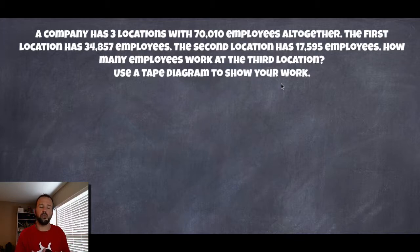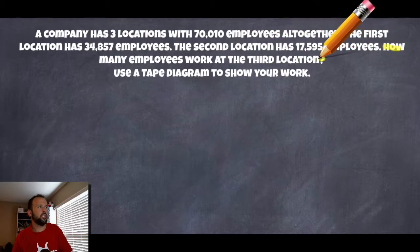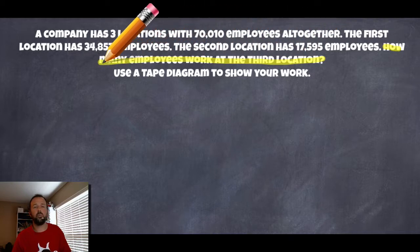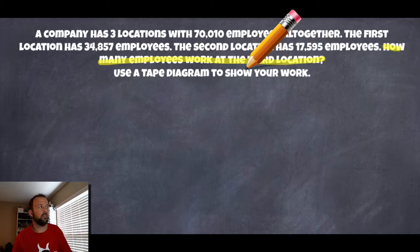And use a tape diagram to show your work. We've learned skills like using that tape diagram — really drawing out our problem, drawing out the different parts, and breaking it down so we can see what's going on. So I'm going to start by dissecting the problem. The question it's asking us is: how many employees work at the third location? That's what we need to find out, and there's no number given for it.